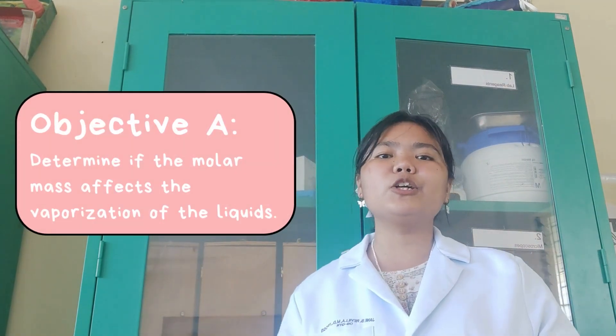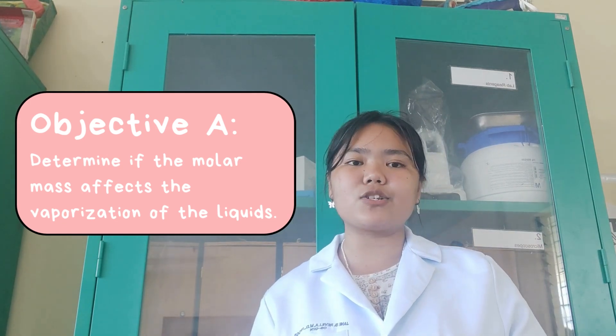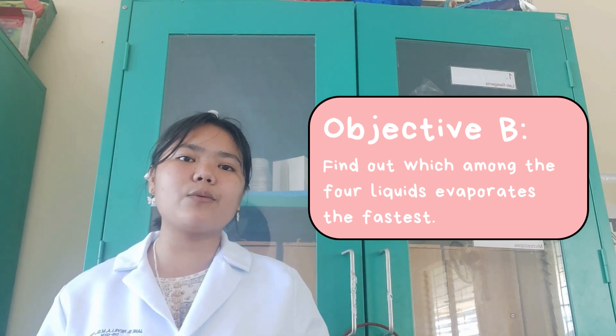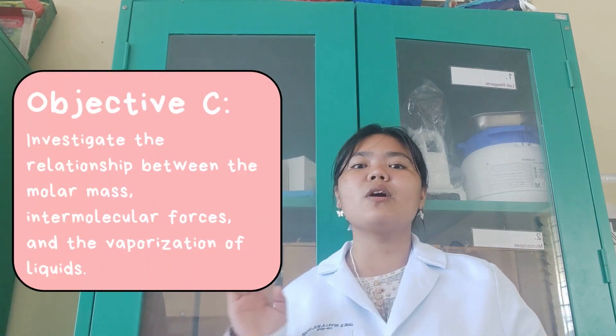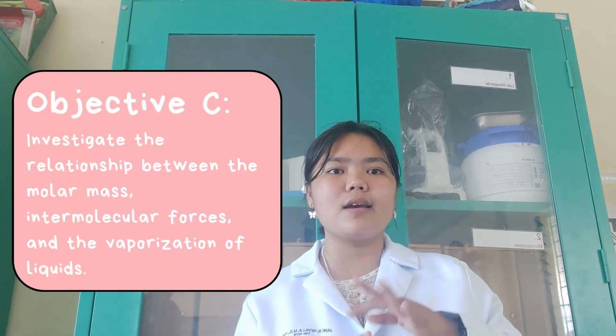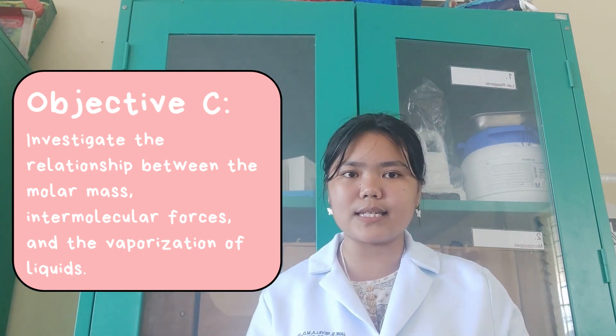To know more about that topic, our group has three objectives. The first one is to determine if the molar mass affects the vaporization of the liquids. The second one is to find out which among the four liquids evaporates the fastest. And the third one is to investigate the relationship between the molar mass, intermolecular force, and the vaporization of the liquids.